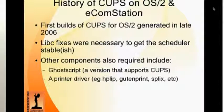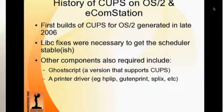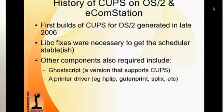First builds of CUPS were generated in late 2006, and the reality is the first builds weren't very useful. The scheduler used to get hung up, jobs would get stuck in the queue, and it would crash. With help from Netlabs, quite a few fixes were made to the select code in LibC, and with those fixes the scheduler is stable — though I say 'ish' because there are still some foibles that exist. Select on LibC isn't the most stable API in the history of mankind.